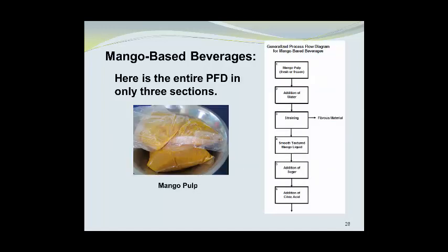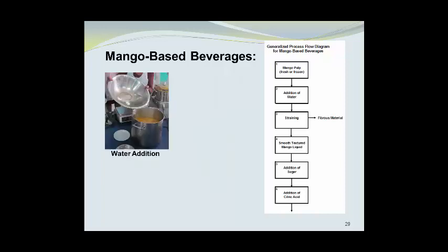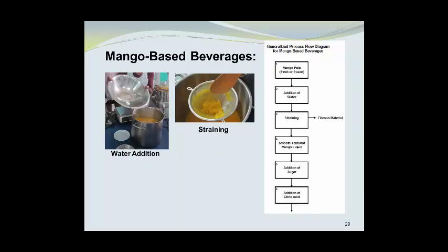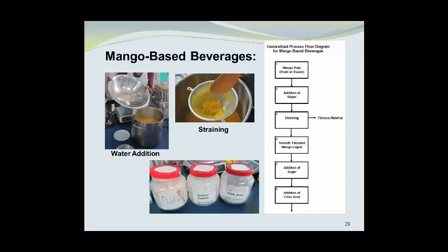Here is the entire process flow diagram in three sections. We begin with the mango pulp, add water, strain if desired, and then add minor ingredients — minor in terms of weight percent. These include citric acid for pH control, sodium sorbate as a preservative, and pectin if you want to enhance mouth feel with a little thickening.